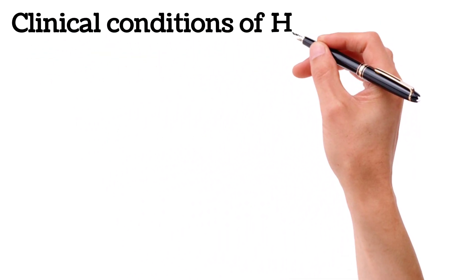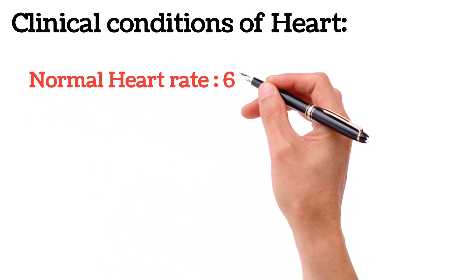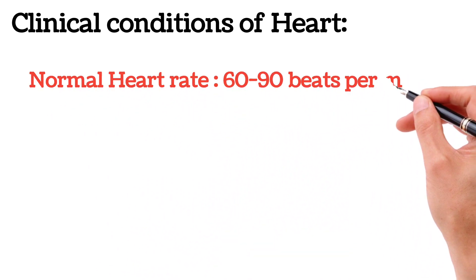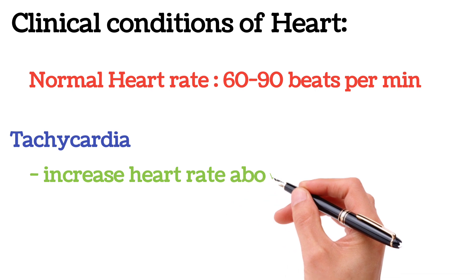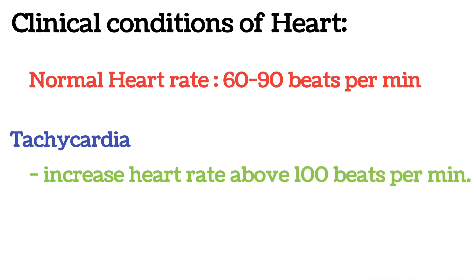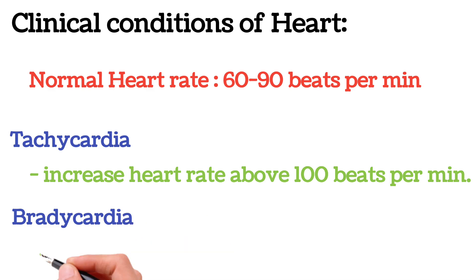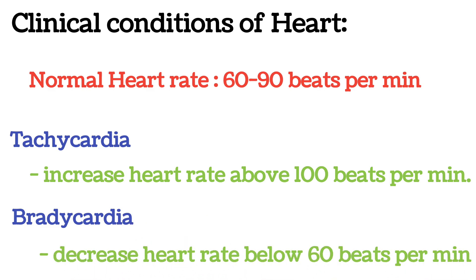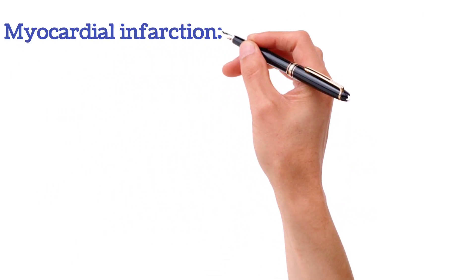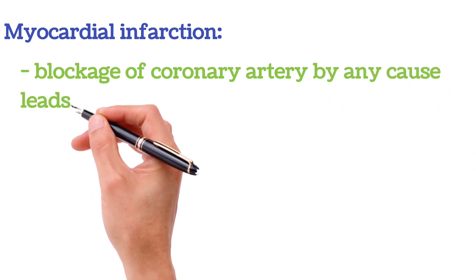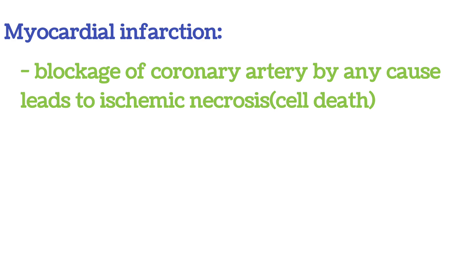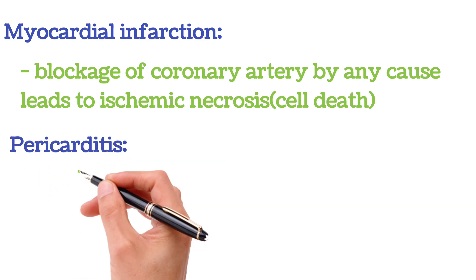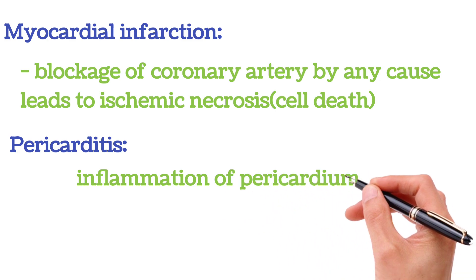Clinical conditions of the heart. The normal heart rate is 60 to 90 beats per minute. Tachycardia is an increased heart rate above 100 beats per minute. Bradycardia is a decreased heart rate below 60 beats per minute. Myocardial infarction is the blockage of a coronary artery by any cause, leading to ischemic necrosis or cell death. Pericarditis is inflammation of the pericardium.